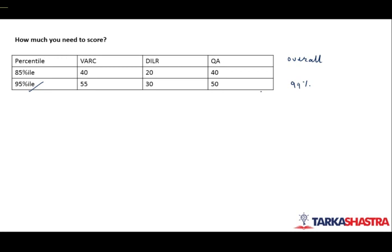So last year, 99 percentile was at a score of 140 marks. If you do the total, this is 135 marks. If you score 55 in VARC, 30 marks in DILR, and 50 in QA, the total is 135. So if you score 95 percentile approximately in each of the sections, your overall score will be in the range of 99 percentile.